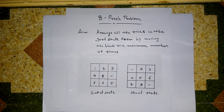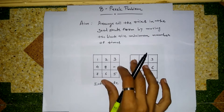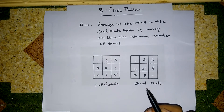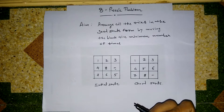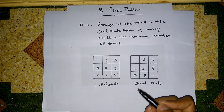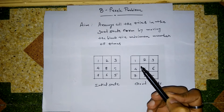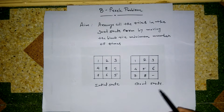Welcome to Technology Begins. Today I am going to show you the 8 puzzle problem. The 8 puzzle problem is a 3x3 matrix which has numbers 1 through 8 on it, and there is one blank tile which can be moved forward, backward, left, and right. The main aim of the 8 puzzle problem is to arrange all the tiles in goal state form by moving the blank tile a minimum number of times.